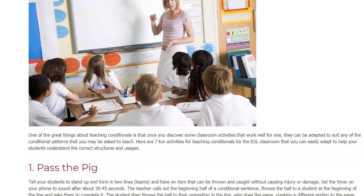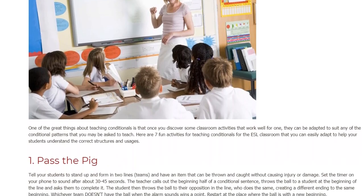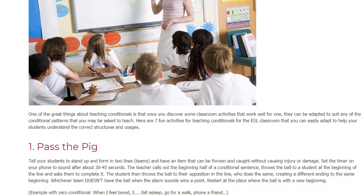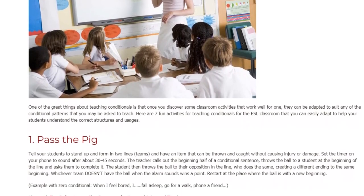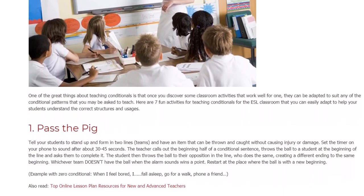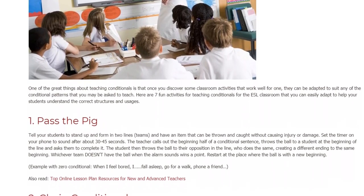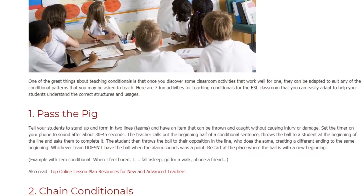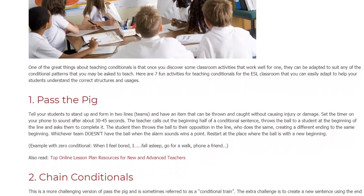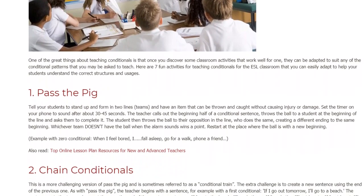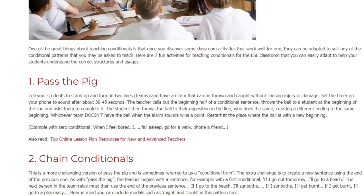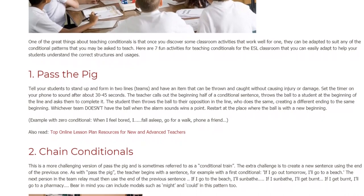1. Pass the Pig. Tell your students to stand up and form two lines, or teams, and have an item that can be thrown and caught without causing injury or damage. Set the timer on your phone to sound after about 30-45 seconds. The teacher calls out the beginning half of a conditional sentence, throws the ball to a student at the beginning of the line and asks them to complete it. The student then throws the ball to their opposition in the line, who does the same, creating a different ending to the same beginning. Whichever team has the ball when the alarm sounds wins a point. Restart at the place where the ball is with a new beginning.